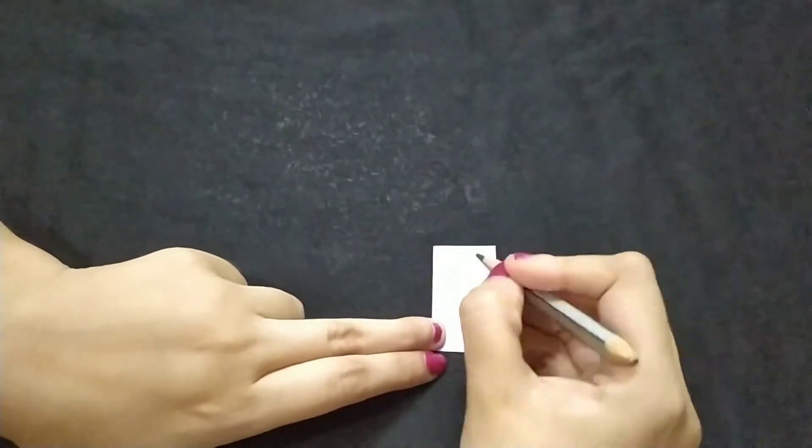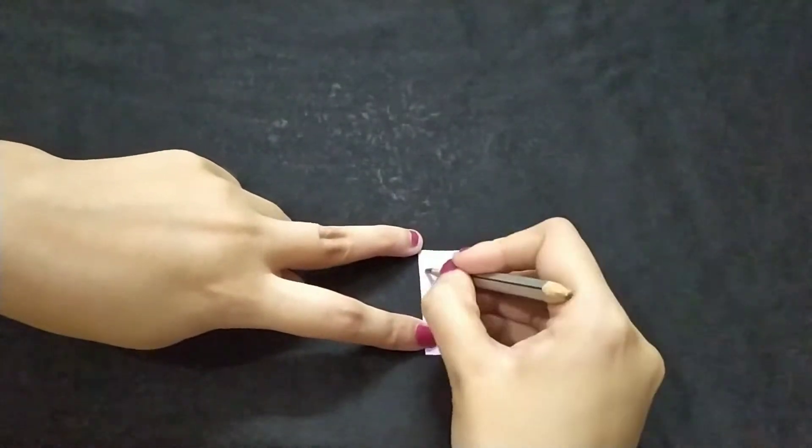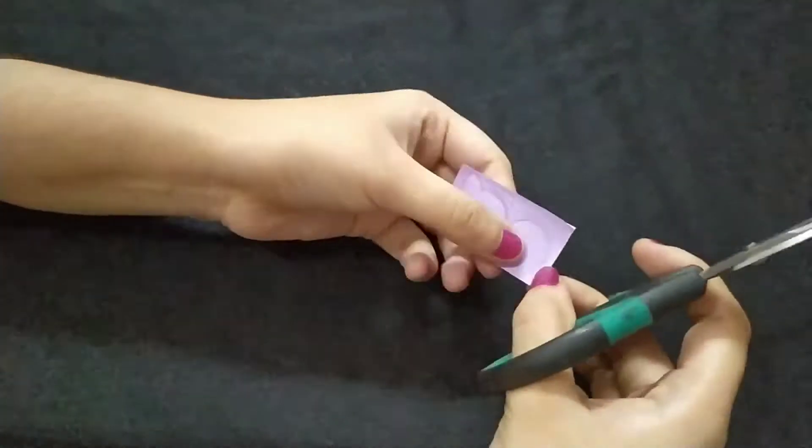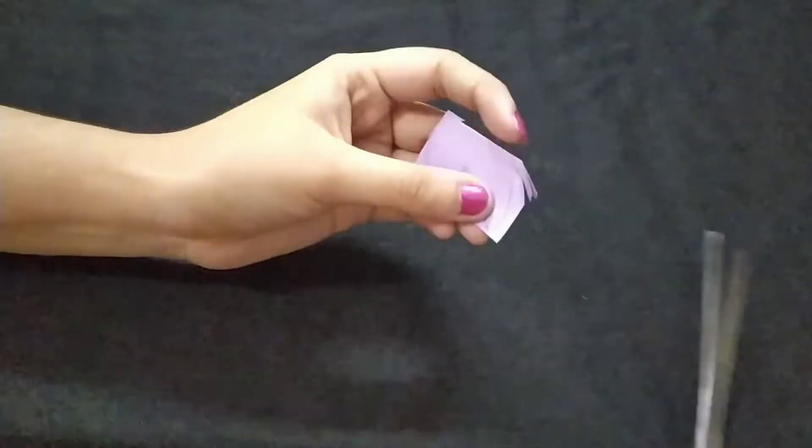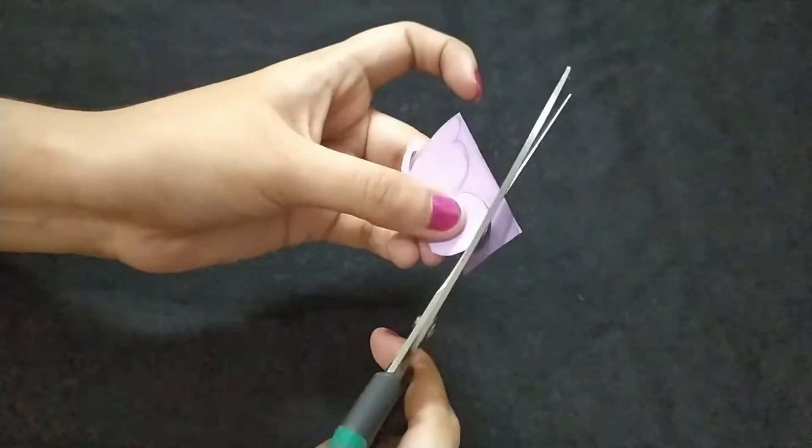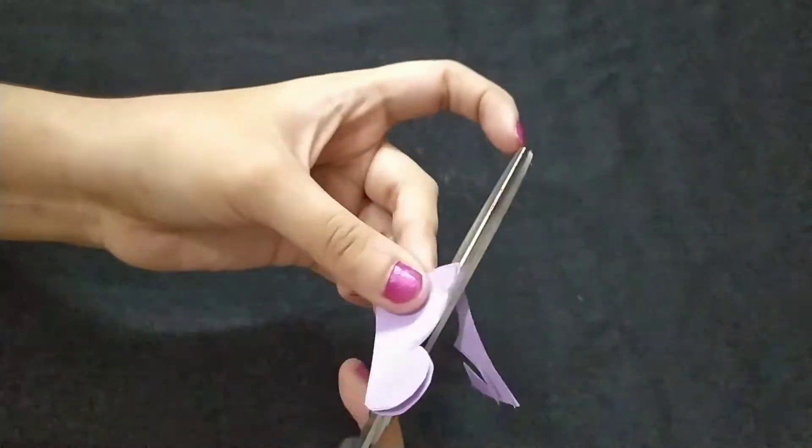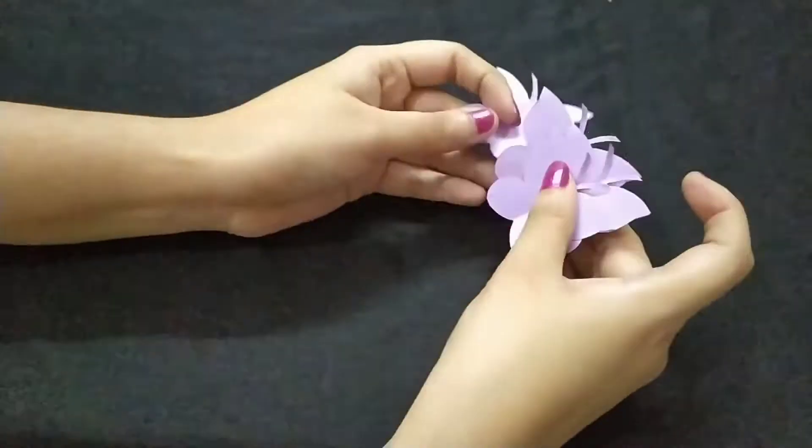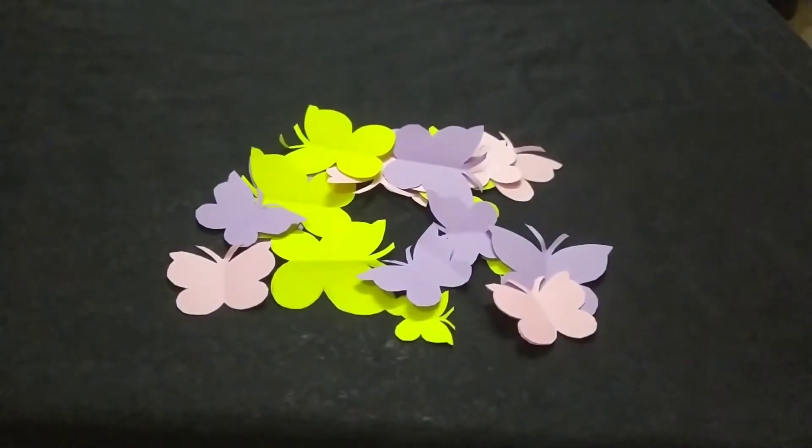At first, I have taken a square shaped colored paper and am drawing an outline of a butterfly in it. Now I am cutting it. Cut it very carefully with patience. I have cut some smaller butterflies too, so I have some multicolored butterflies ready.